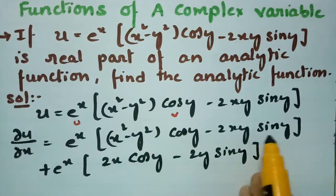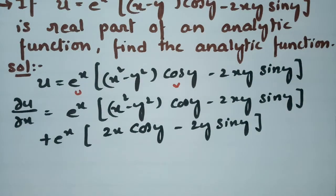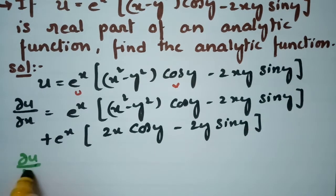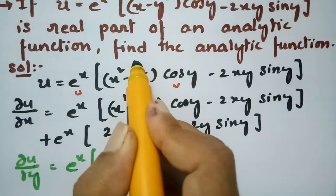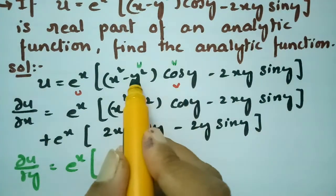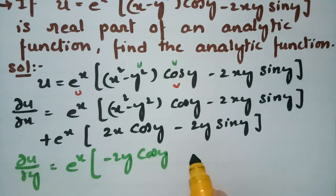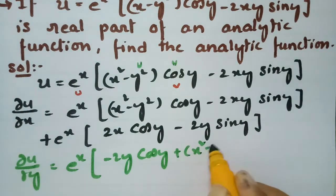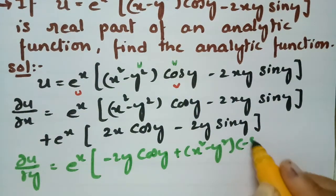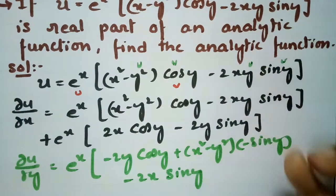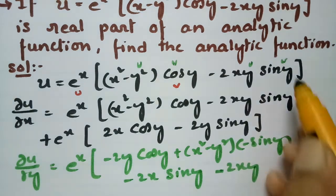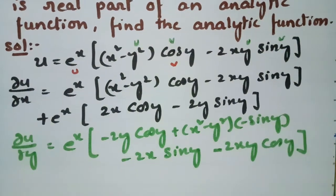Now I compute ∂u/∂y. There is no y in e^x, so e^x remains as the first function. Differentiating the second part with respect to y: the derivative of (x²−y²) gives −2y, times cos y, plus (x²−y²) times −sin y, minus 2x·sin y, minus 2xy·cos y.